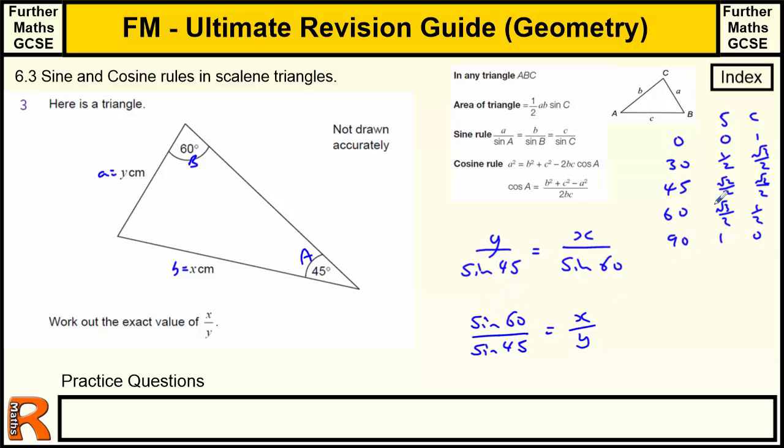So we want sine of 60. Sine of 60 is root 3 upon 2, and sine of 45 is root 2 upon 2. So we're dividing fractions, so that's the same as root 3 upon 2 times by this one upside down, which is 2 over root 2. So the 2's are going to cancel to leave us with root 3 upon root 2. That could be written as root 3 over 2. I think this is the better answer, root 3 over 2. But that one would probably be okay as well. So that's using standard values that you're supposed to be aware of.